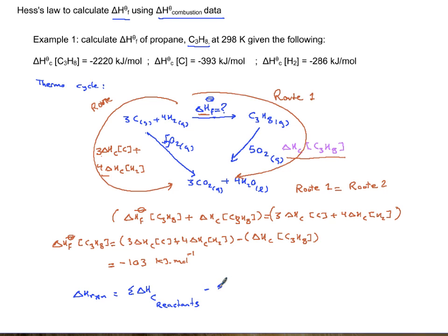minus sum of delta H combustion of products. So this is an application of Hess's law to calculate delta H formation of a reaction once you have combustion information.